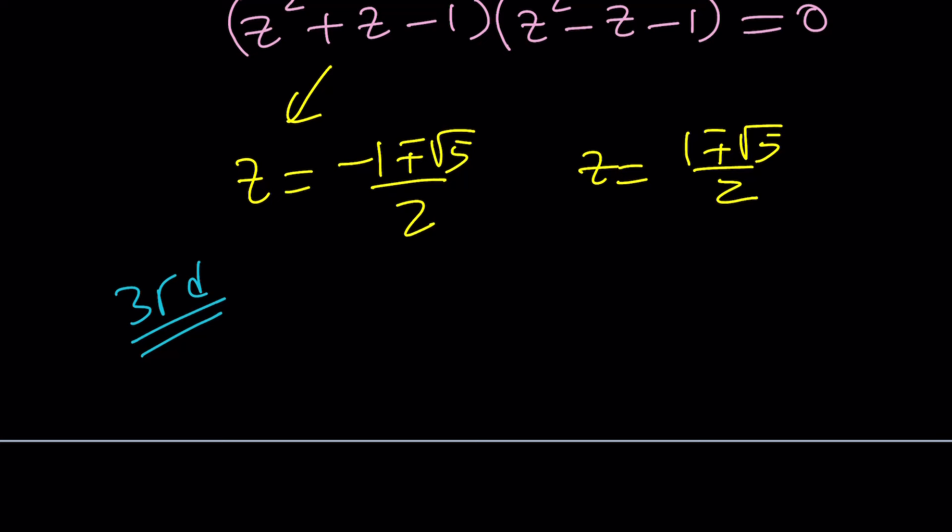So third method - we start with the original equation again, set it equal to 0. This time, remember with the first method we changed z squared to w, with the second we used difference of two squares. With the third method we're going to complete the square.